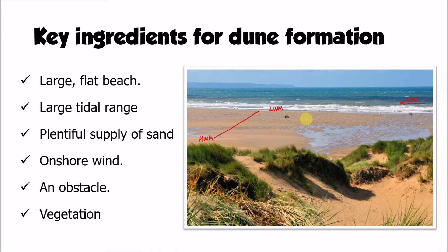We also need an onshore wind — one that is blowing from the sea onto the shore. The dominant wind direction actually needs to be coming in perpendicular to the beach in what we call an onshore direction. That's because the wind has to be blowing the sand in the right direction. If the wind is blowing in lots of different directions, the sand is just going to get blown around all over the place and you're not going to have that concentration of sand in one place, which is really important for the development of a sand dune.